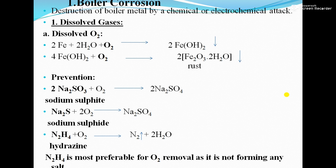First, corrosion due to dissolved gases — the first gas is dissolved oxygen. Fe (iron) is majorly used as boiler metal. Oxygen present dissolved in the water reacts with the boiler metal and forms ferrous hydroxide. If more oxygen is present in the water, that ferrous hydroxide is converted into rust.